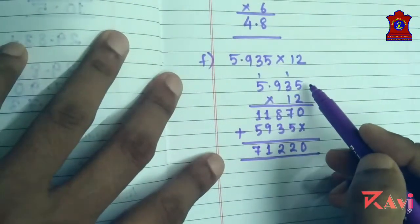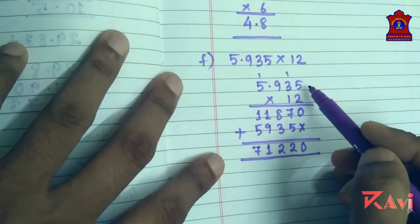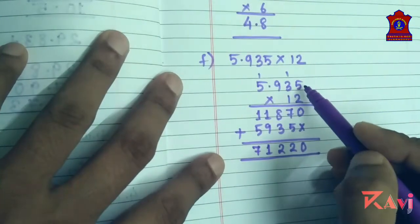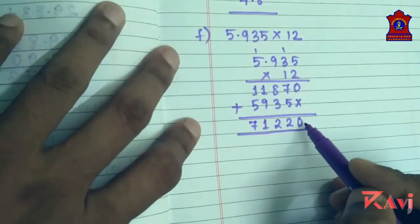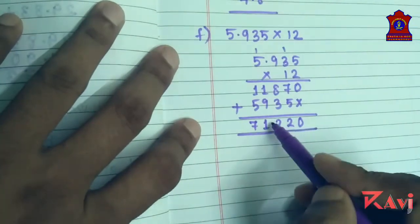Clear, so we have got seventy one thousand two hundred twenty. Now look at the question, here you had a decimal after three digits from the right. Now count one, two, three and a decimal. Look at the product, and from right you have to count three digits: one, two, three and put a decimal.